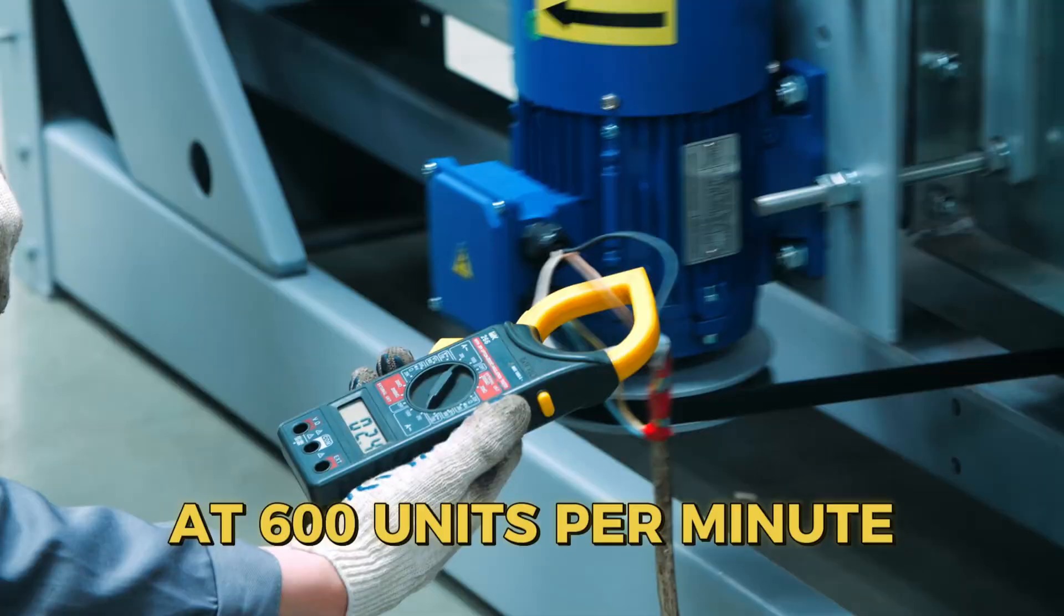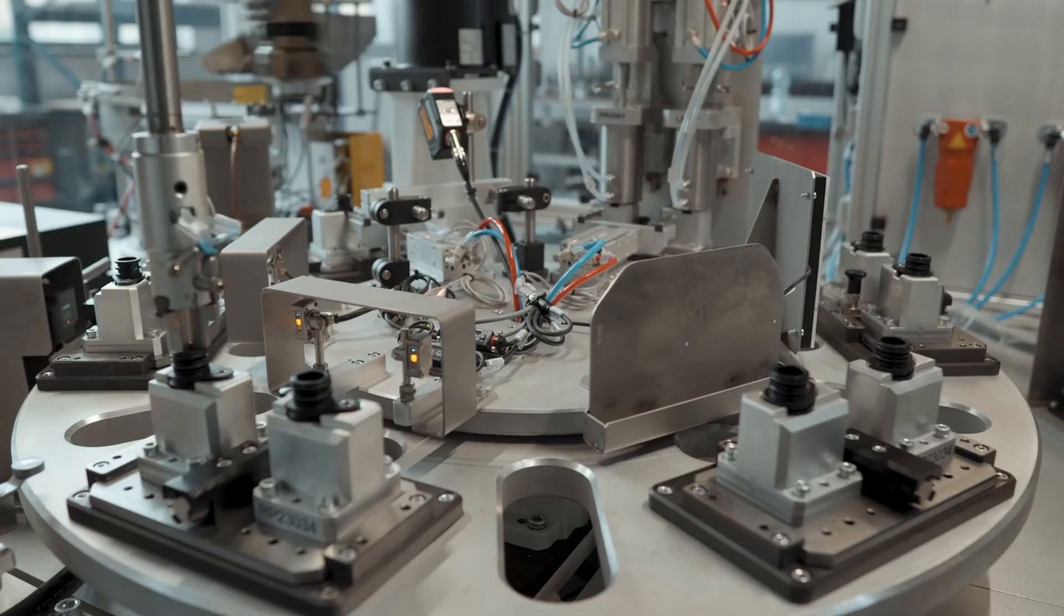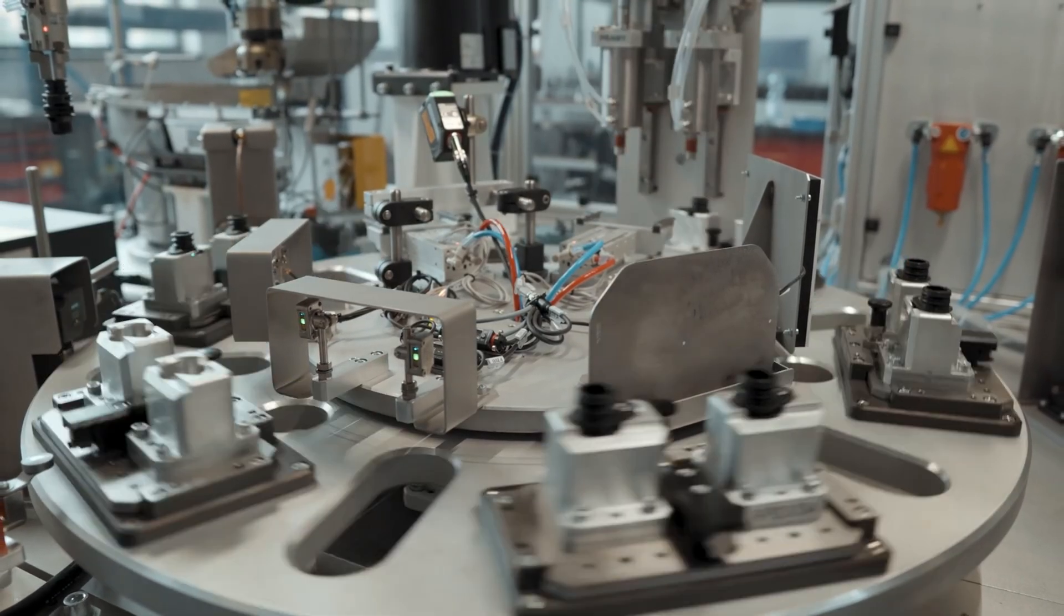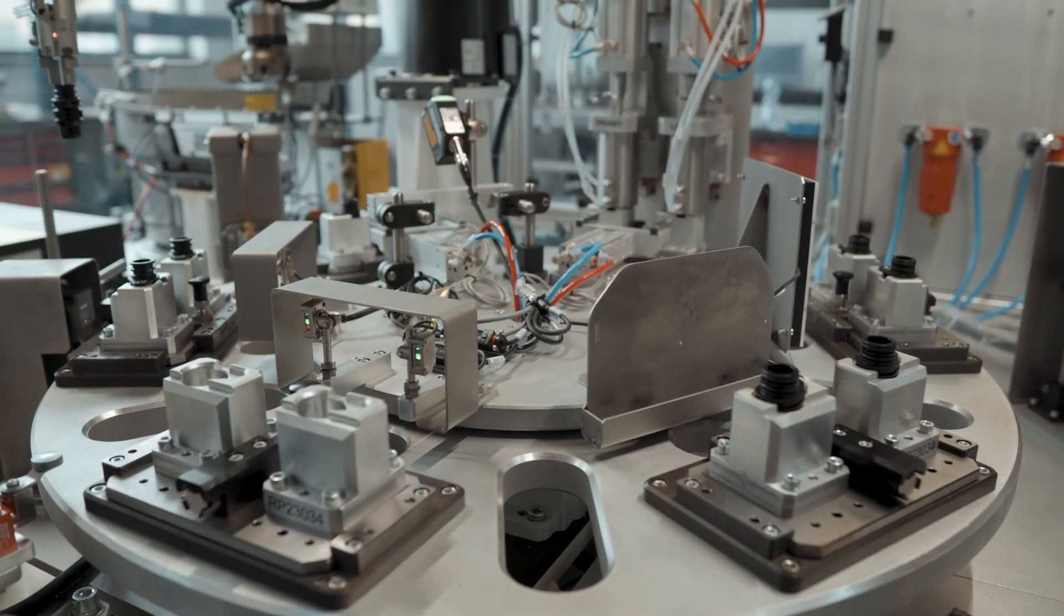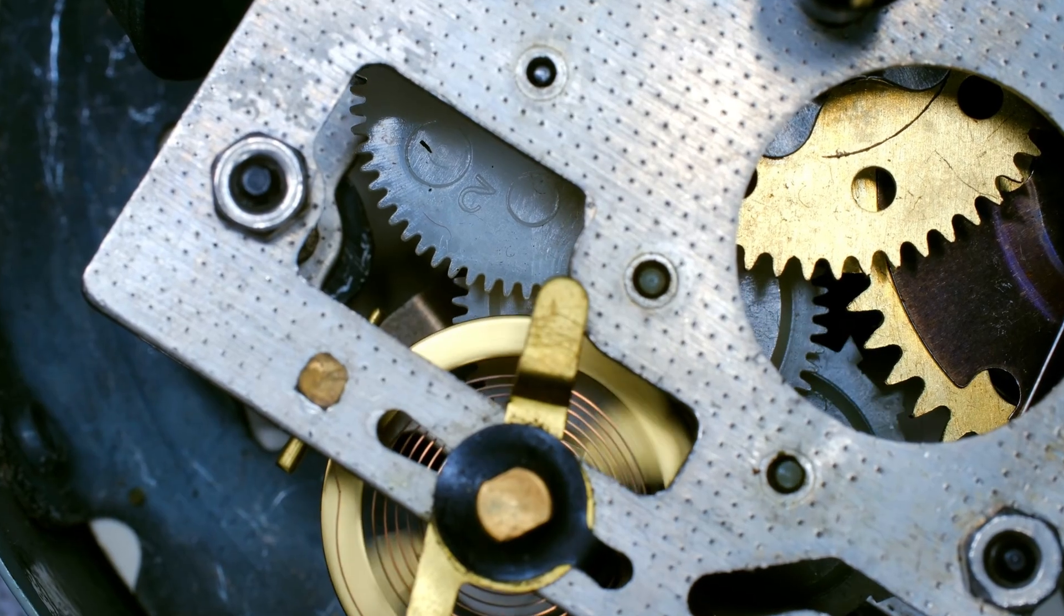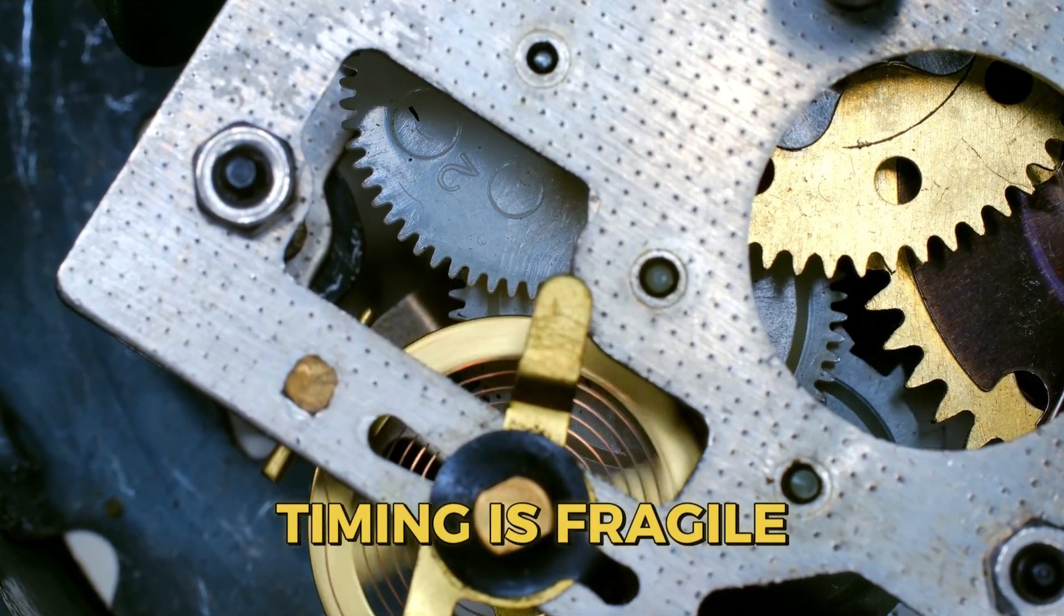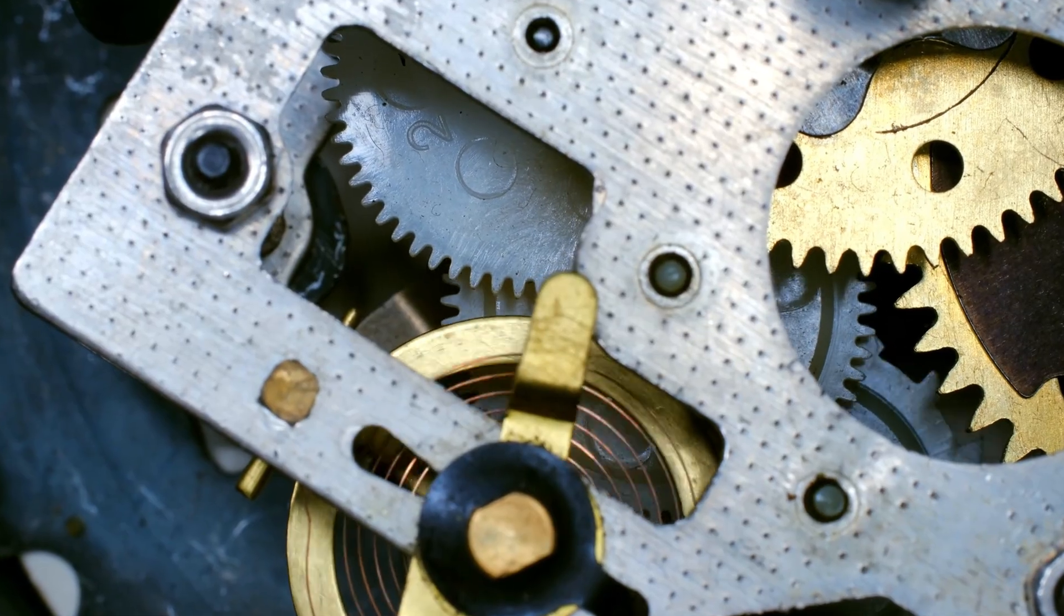Imagine a line running at 600 units per minute, sensors flashing like strobe lights, robotic arms cycling so fast you barely see them move. Everything relies on perfect timing, machine. But timing is fragile. And in this story, it broke.